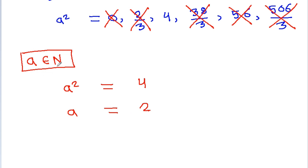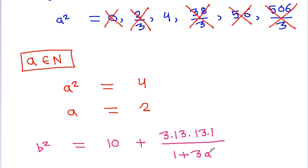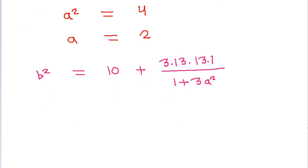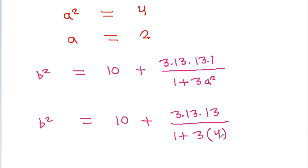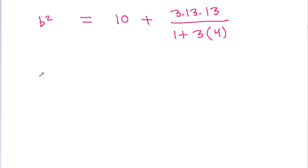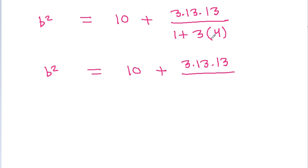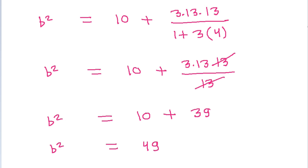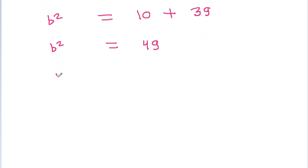Since a belongs to natural numbers, a cannot be minus 2. With a squared equal to 4, we compute b squared equal to 10 plus 3 times 13 times 13 divided by 1 plus 3 times 4, which is 10 plus 507 divided by 13. The 13 cancels and we get b squared equal to 10 plus 39, so b squared equals 49 and b equals 7.